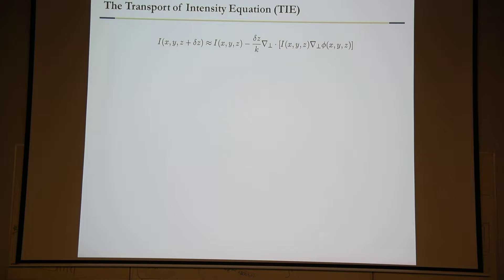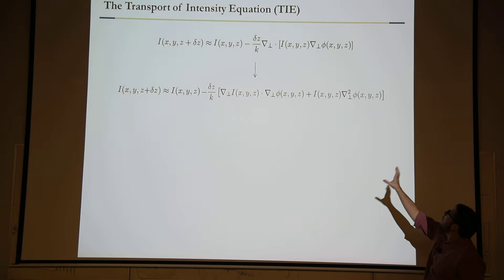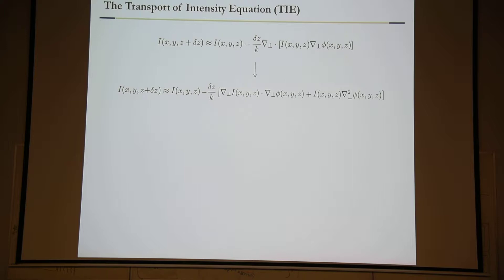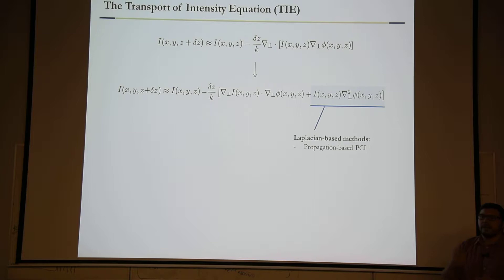Now, if we don't do that, we just expand this product. You've got a product of intensity and transverse gradient of the phase. So you can expand it and you've got two bits: a dot product between intensity gradient and phase gradient, and then intensity times the phase Laplacian.